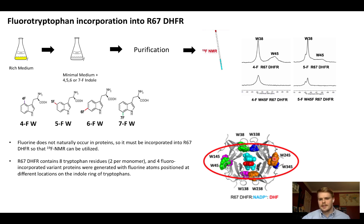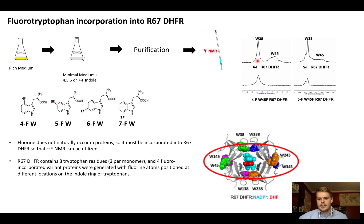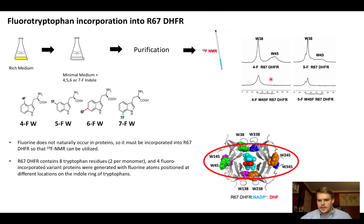A quick note on how we assign these peaks. Here is the NMR spectra for 4F and 5F, showing tryptophan 38 and tryptophan 45 respectively. We determined this by constructing a mutant protein — specifically 4F tryptophan 45 to phenylalanine. By substituting phenylalanine for tryptophan, we see the tryptophan 45 peak disappear, confirming which peak corresponds to which residue.